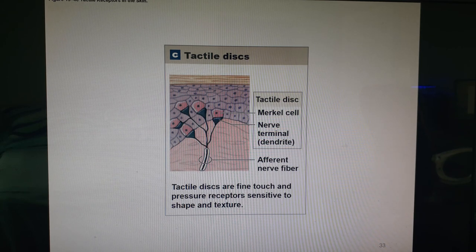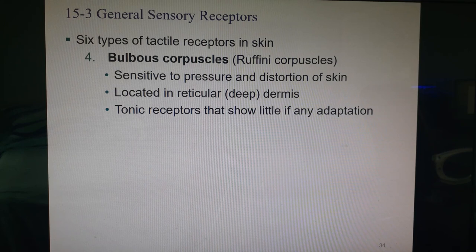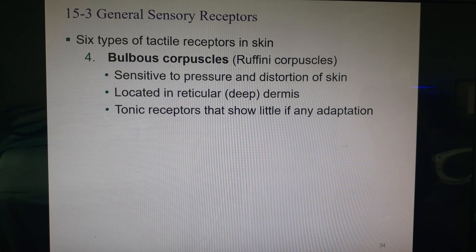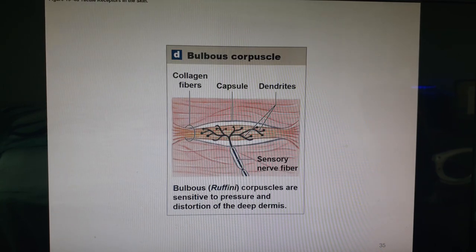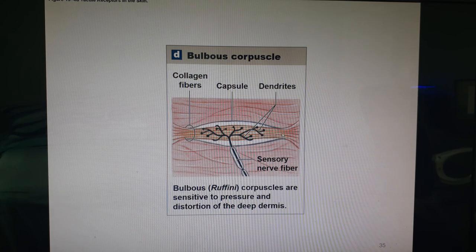So we've had free nerve endings, root hair plexus, and Merkel discs. Next are bulbous corpuscles, also called Ruffini corpuscles or Ruffini end organs. These look for distortion or deep pressure in the skin and are tonic receptors showing little adaptation. If someone grabs your arm it activates these. They look like free nerve endings wrapped up with collagen fibers.